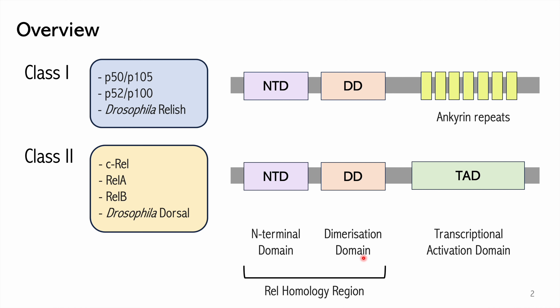with proteins from the same or from the other class. The class 1 protein has ankyrin repeats on its C-terminus which need to be cleaved before it can enter the nucleus. So the name of a class 1 protein comes as a pair of numbers — for example, the inactive P105 can be cleaved to P50, which is active.